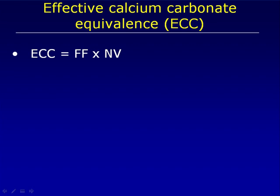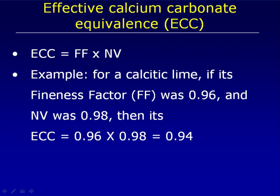The effective calcium carbonate equivalence is calculated by multiplying the fineness factor by the acid neutralizing value. For example, if we have values of 0.96 and 0.98, together we'd get an overall effective calcium carbonate equivalence of 0.94. That means that on a per weight basis, if we applied the same amount of this limestone compared with calcium carbonate, we'd get 0.94 of the pH response in peat.